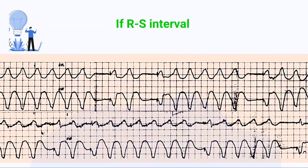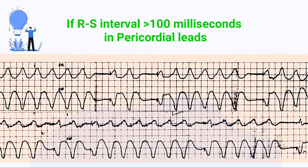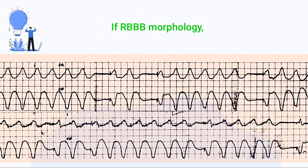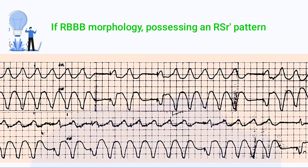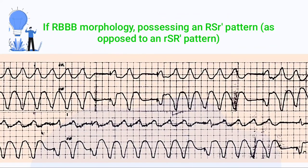If the R-to-S interval exceeds 100 milliseconds in any one precordial lead, then VT is the diagnosis. Additionally, if RBBB morphology shows an RSR pattern as opposed to an RSR-prime pattern, VT can be diagnosed.